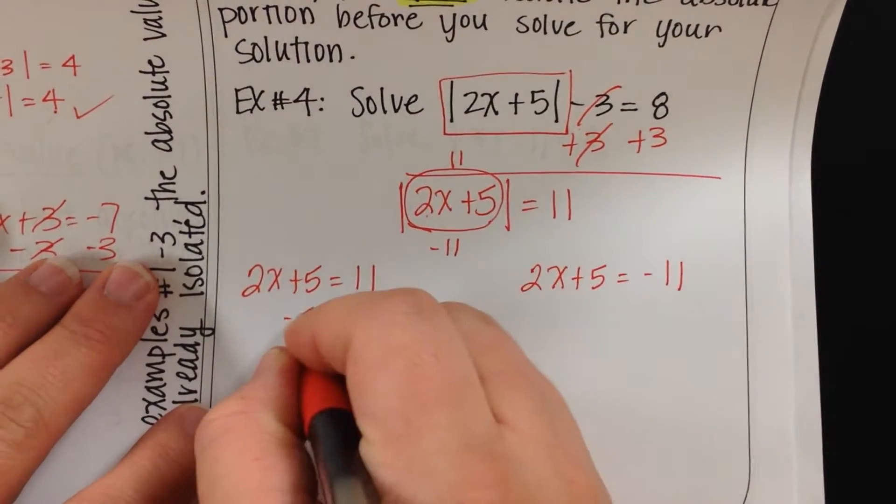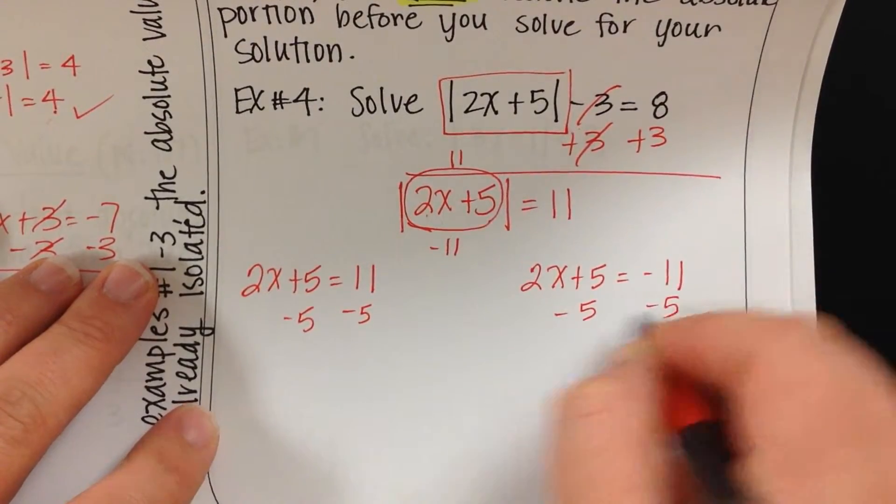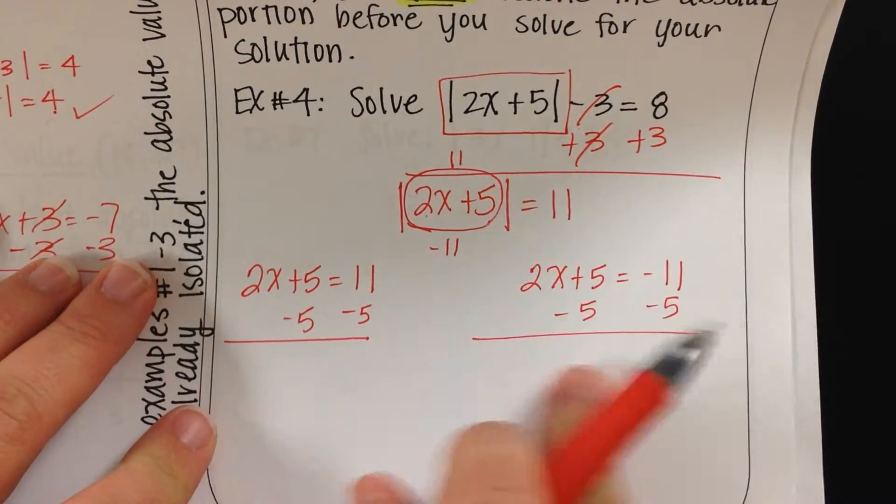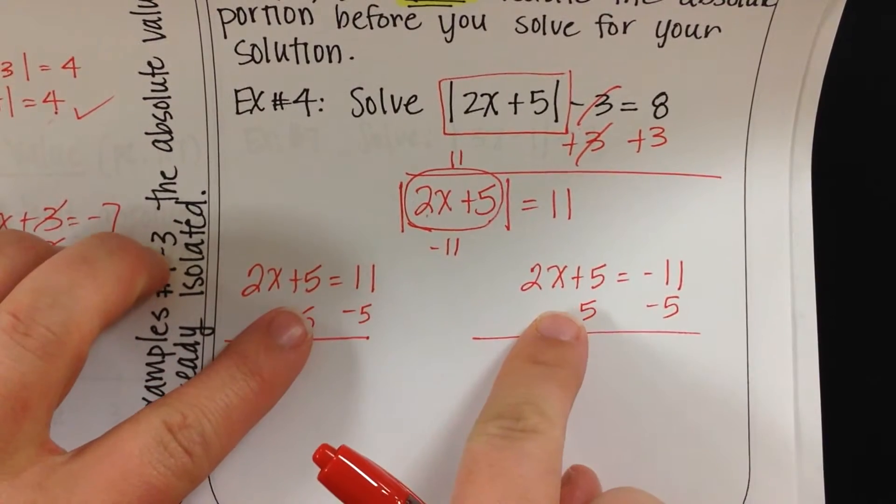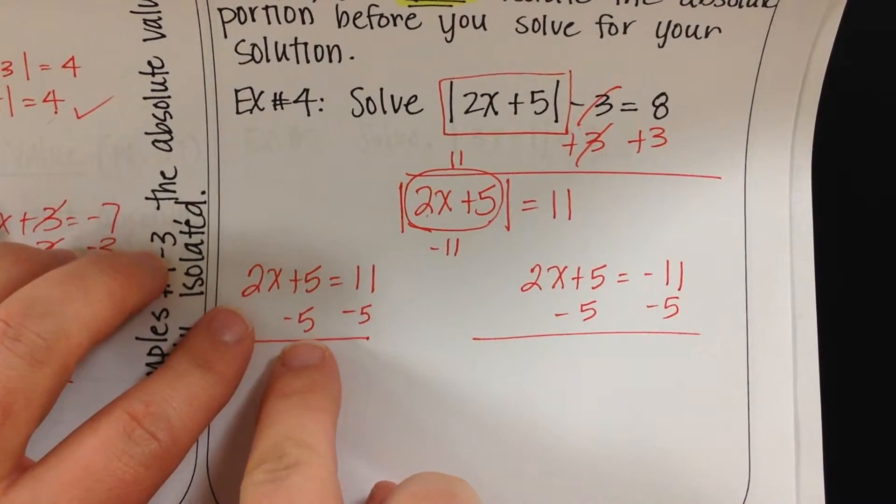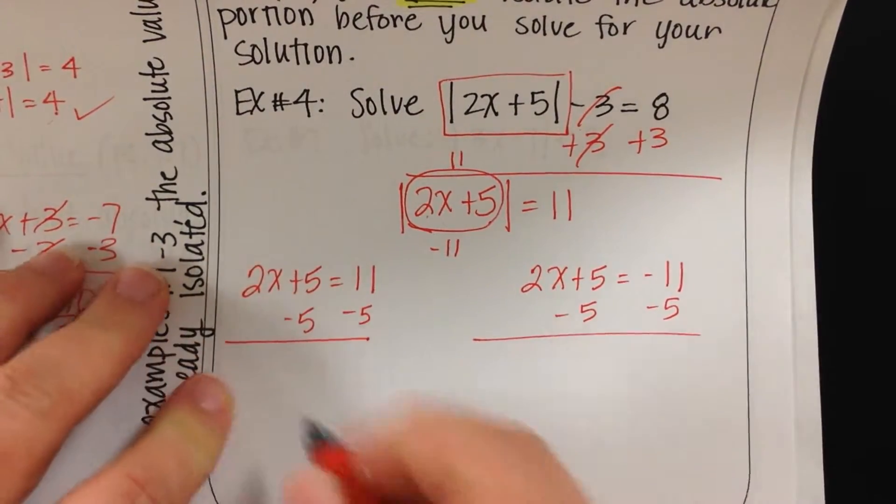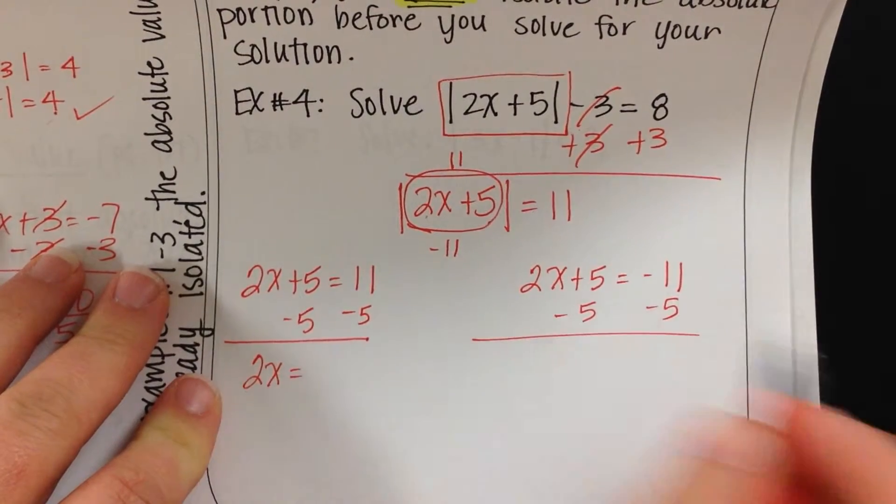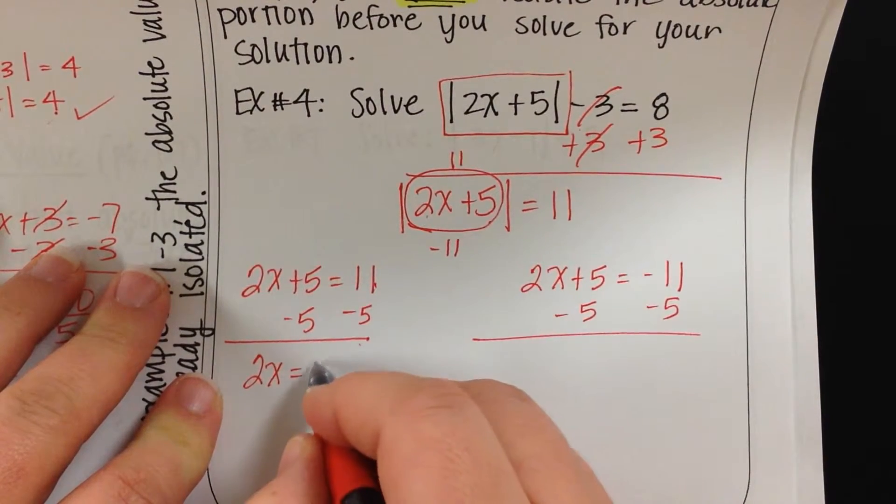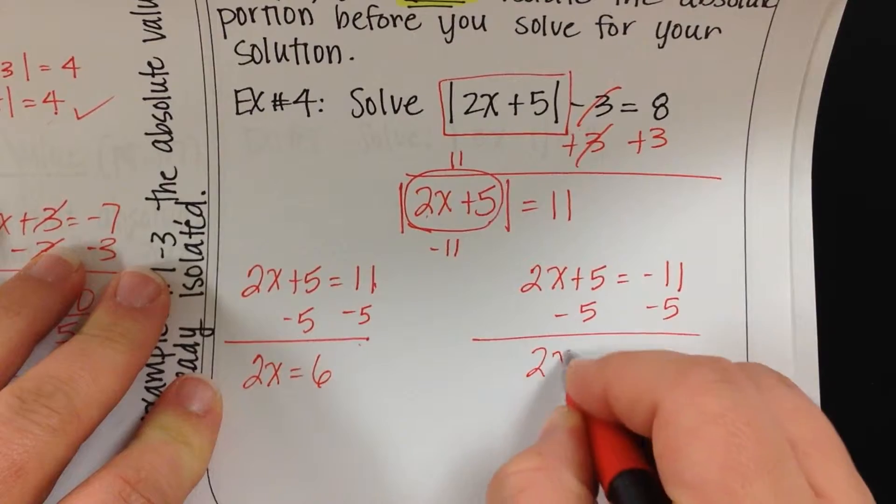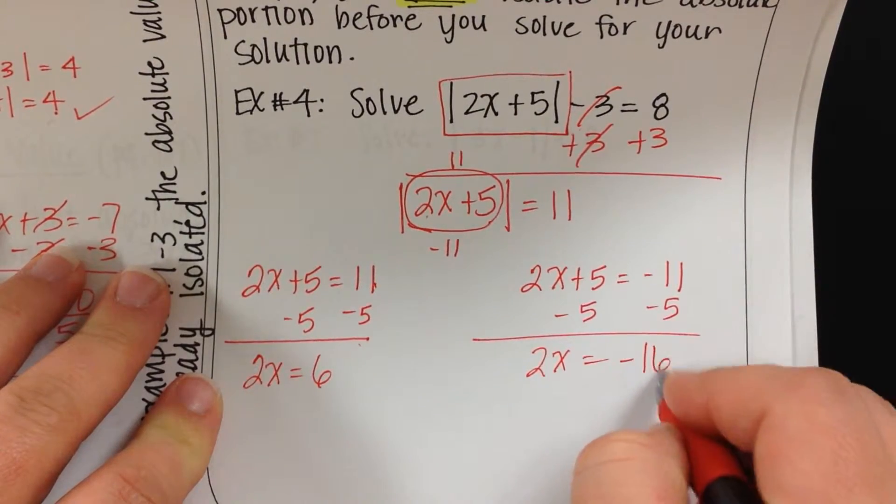Minus 5 on both sides. And that's what makes this super easy, since these are basically identical left side equations, getting x by itself is going to be the same process throughout. So 2x equals 11 minus 5 is 6. 2x equals negative 16.